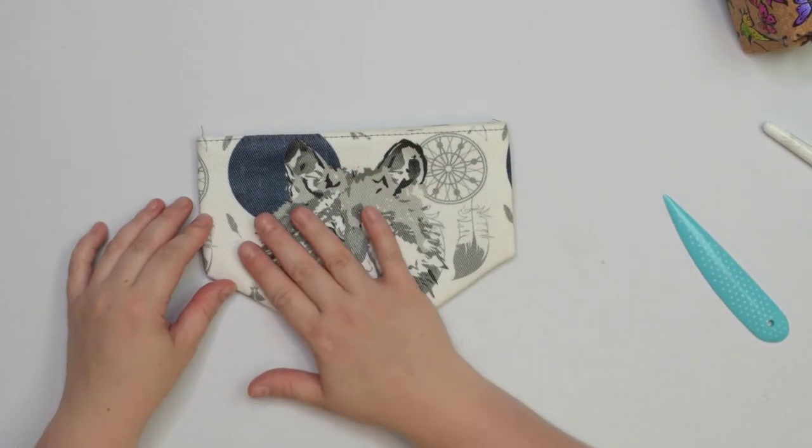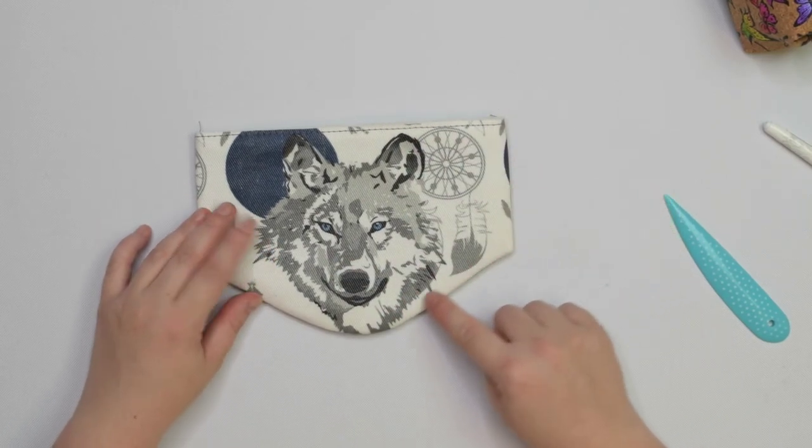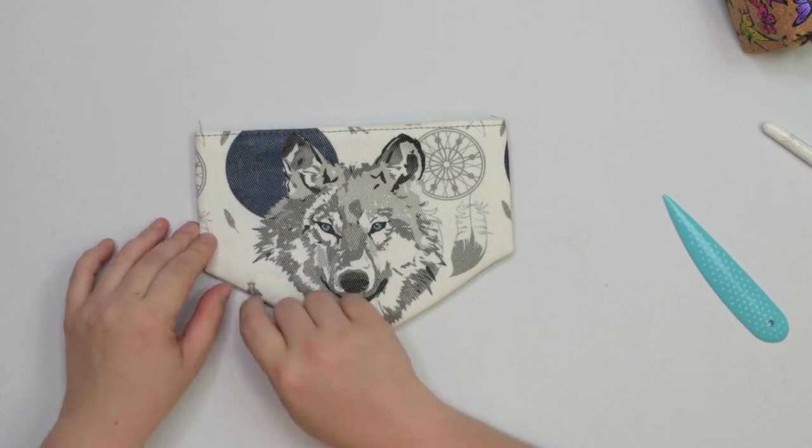You can press the seam flat, then you're going to topstitch along the finish edges and lastly baste at the top.